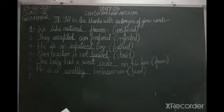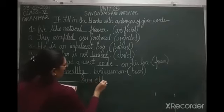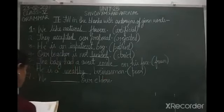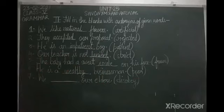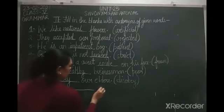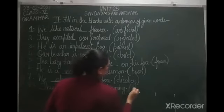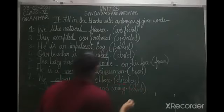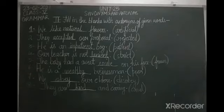The seventh sentence: 'We ___ our elders,' with 'disobey' in brackets. The antonym of disobey is obey, so we obey our elders. The eighth sentence: 'They are ___ and caring,' with 'cruel' in brackets. The antonym of cruel is kind, so they are kind and caring.